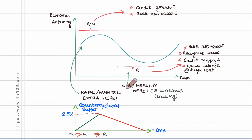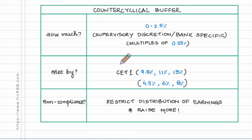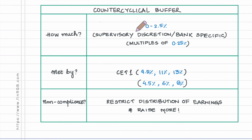This covers the motivation behind the counter cyclical buffer. Now let us quickly look at how much of the counter cyclical buffer is required. It is a number which can be between zero and two and a half percent, a number which is set as per supervisory discretion.